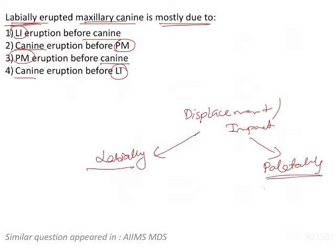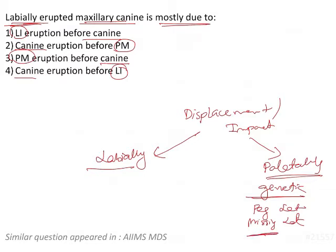In a palatally displaced canine, the etiology is genetic predisposition. There is a lack of guidance because either a peg-shaped lateral incisor is present in the arch or the lateral incisor is missing. The roots of the lateral incisor help to guide the canine into the arch, so whenever the lateral incisor is missing or has an abnormal shape, this guidance is lost and the canine gets displaced palatally.